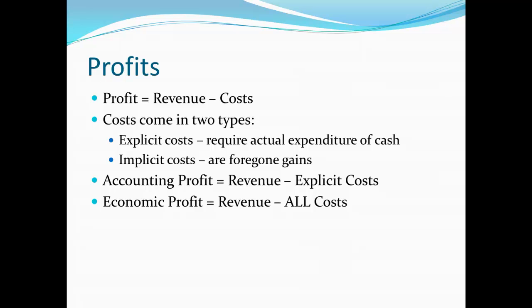But on the other hand, we could talk about economic profit. Economic profit, we take revenue and we subtract off all the costs. This would include the explicit costs, but it would also include the implicit costs. This is really what economists are interested in. Because if we include explicit and implicit costs, we're accounting for the opportunity cost.